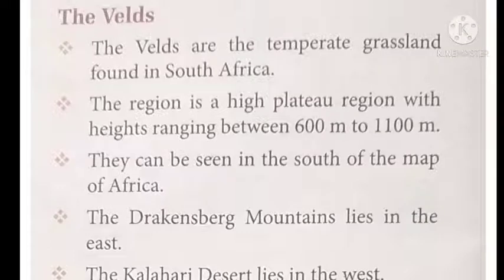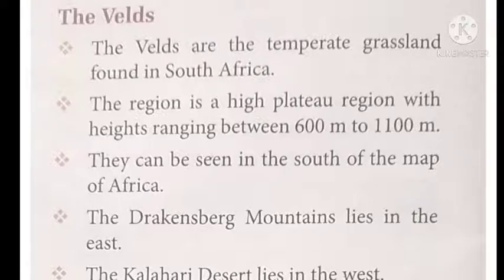Good morning students, welcome once again to my class. This video is for Class 7. Today we'll continue the revision of our chapter of geography, Chapter Number 20: Life in Grasslands and Dry Areas. We will continue with the topic of the Velds. The Velds is also a type of temperate grassland.